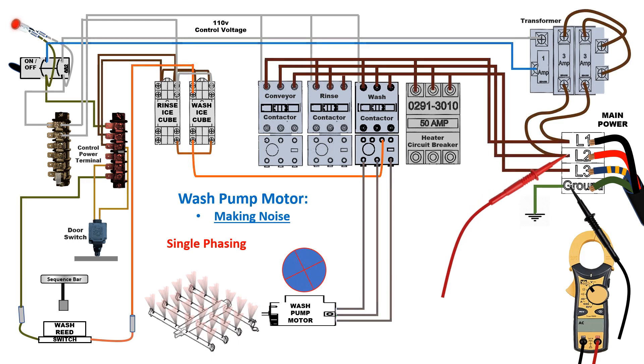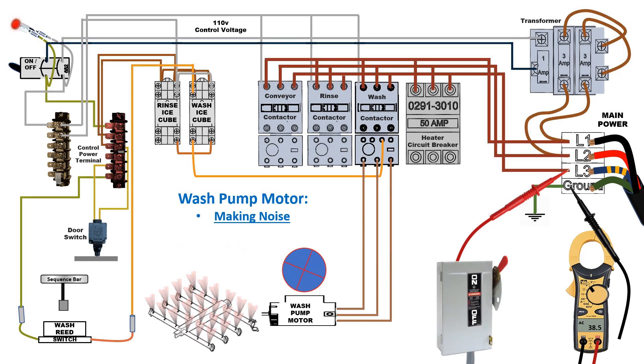We now use our multimeter, again set to ground, and we test L1, L2, L3. We verify if we lost the leg or are we single phasing coming in through main power. And as you can see, we have also lost the leg here.